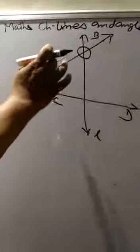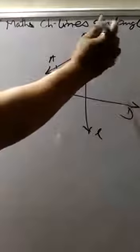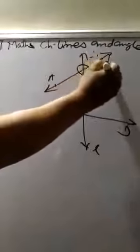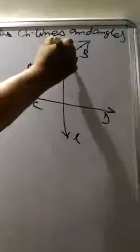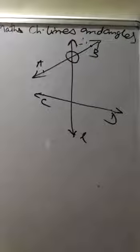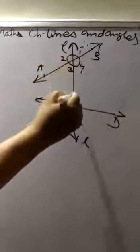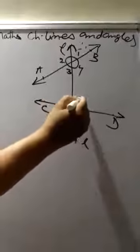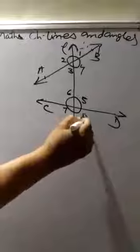These are the two lines AB and CD. This is a transversal line L. Now angles 1, 2, 3, 4, 5, 6, 7, 8 are formed.